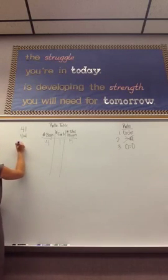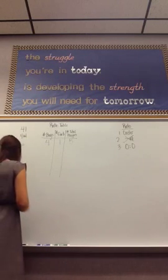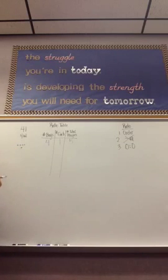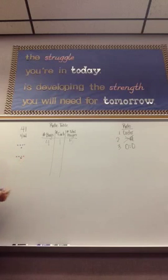So, for every four boys that are on the team, there is one girl. Let's say there is one more girl on the team. To keep the ratio of four to one, there would also have to be four more boys on the team.